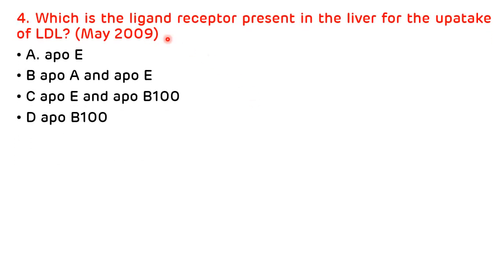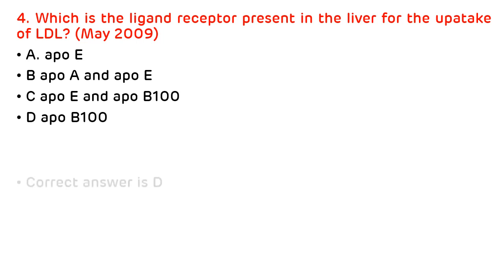The fourth question: which ligand receptor is present in the liver for the uptake of LDL? This was asked in AIIMS May/November 2009. The options are ApoE, ApoA and ApoE, ApoE and ApoB100, and ApoB100. The correct answer is ApoB100, that is option B.